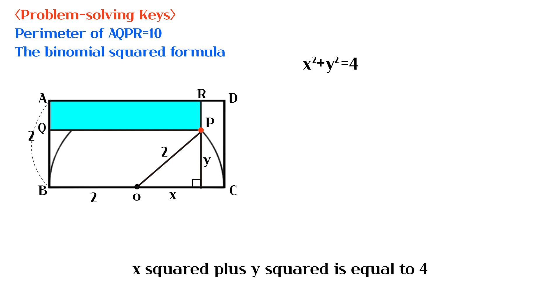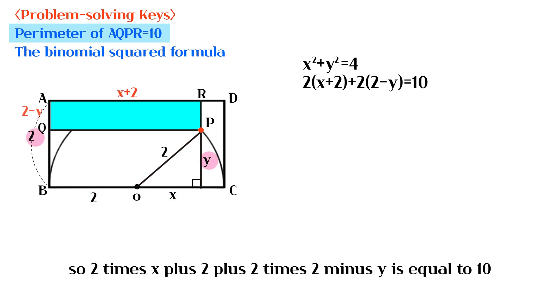x squared plus y squared is equal to 4. The perimeter of rectangle AQPR is given as 10, so 2 times x plus 2, plus 2 times 2 minus y, is equal to 10.